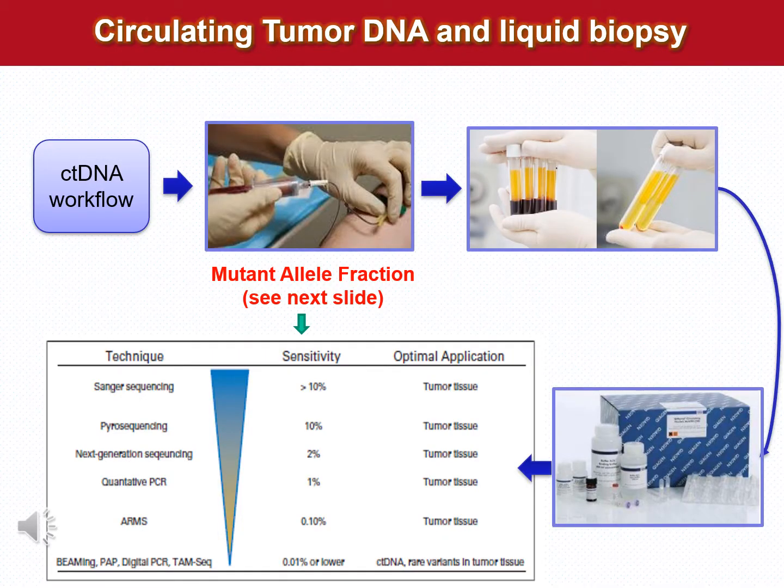So, remember: the smaller the tumor, the smaller the percentage of circulating tumor DNA, and the greater the difficulty in analyzing it. In the subsequent slide, I summarize that the circulating tumor DNA is retrieved from serum obtained after venipuncture, then extracted, amplified, and used for diagnosis. You need highly specific techniques in order to analyze tumor DNA that is represented by less than 0.1% in comparison to the total DNA.